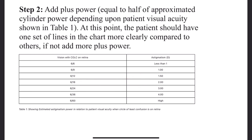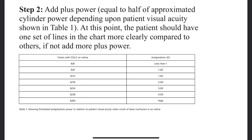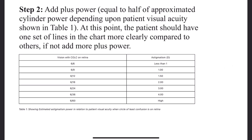Suppose the patient is reading with the best vision sphere 6/18. It is estimated that the uncorrected astigmatism is going to add a plus power equal to half of the estimated astigmatism from the table. If the patient is reading 6/18, the estimated uncorrected astigmatism is around 2 diopters cylinder. So half of that will be +1 diopter sphere, which we're going to add to our best vision sphere.